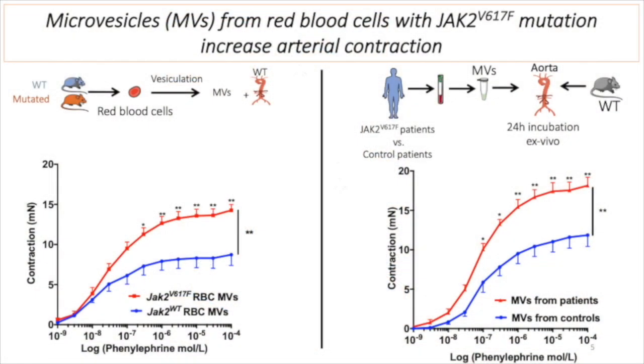The second major finding of our work is the contribution of JAK2 mutated erythrocyte-derived microvesicles to this increased arterial contraction associated with myeloproliferative neoplasms. Microvesicles are cell-derived membranous structures shed from the plasma membrane and released into the extracellular compartment. They are known to be involved in intercellular communication and in the pathophysiology of cardiovascular events.